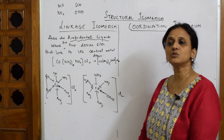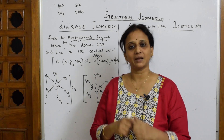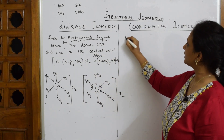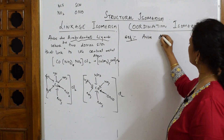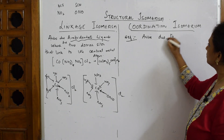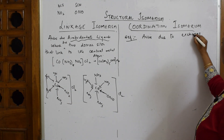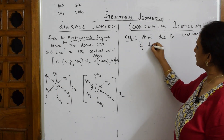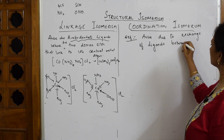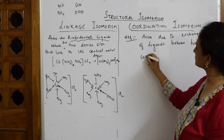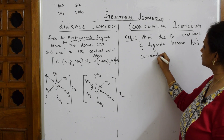Now for coordination isomerism: the coordination sphere is the complex ion inside the square brackets. Coordination isomerism arises due to the exchange of ligands between two coordination spheres. Students must be careful — it is the ligands that get exchanged, not the central metal ions.